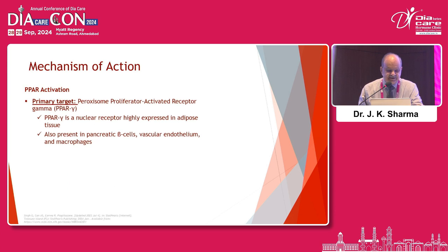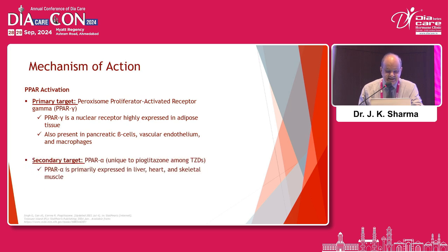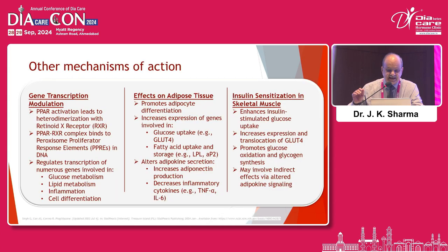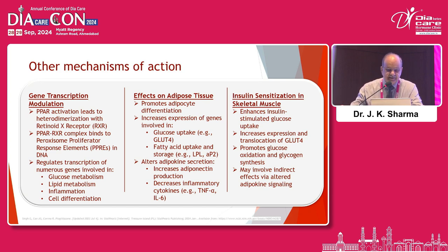The mechanism of action is by PPAR activation. The primary target is the nuclear receptor highly expressed in adipose tissues and also present in pancreatic beta cells, vascular endothelium, and macrophages. The secondary targets are primarily expressed in the liver, heart, and skeletal muscles. Other very important mechanisms include gene transcription modulation: it leads to heterodimerization with the retinoid X receptor, and the complex binds to peroxisome proliferator response elements in DNA, regulating transcription of numerous genes involved in glucose metabolism, lipid metabolism, inflammation, and cell differentiation.